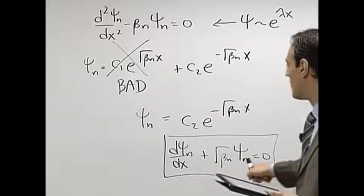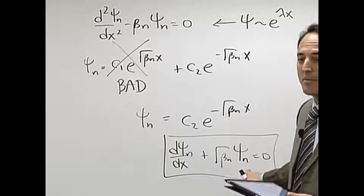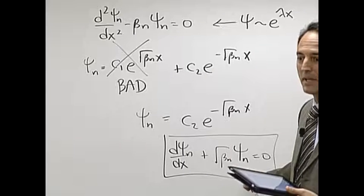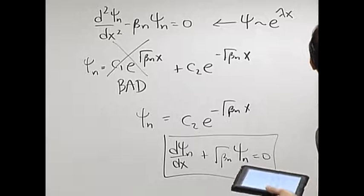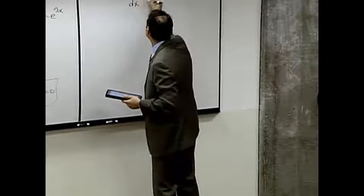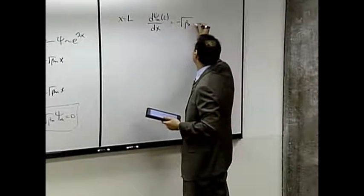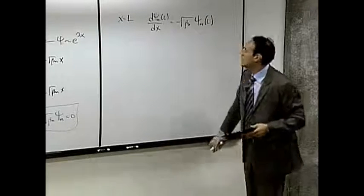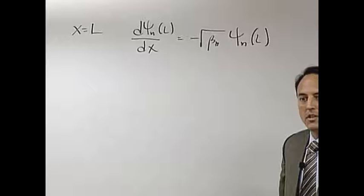In particular, remember, I'm not really going to go to infinity. I'm going to go to this thing called L, which is big. I don't know what big means, but what I want to do then is that x equal to L, I want to impose the following. The psi n at L dx is equal to minus square root beta n. There is my boundary condition.